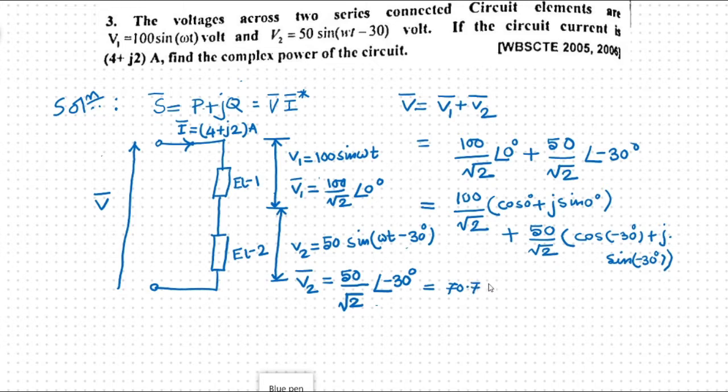So this is equal to 70.71 into 1 plus j0 plus 35.36 into 0.86 minus j0.5. So finally what we will get, the input voltage is equal to 101.11 minus j17.68 volts. This is basically the input voltage to the circuit.